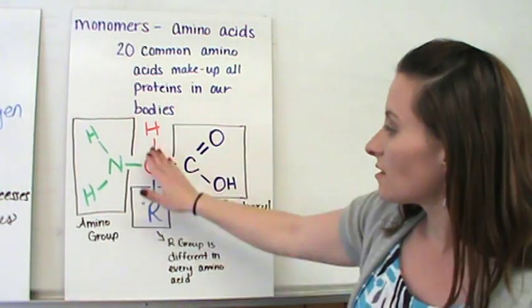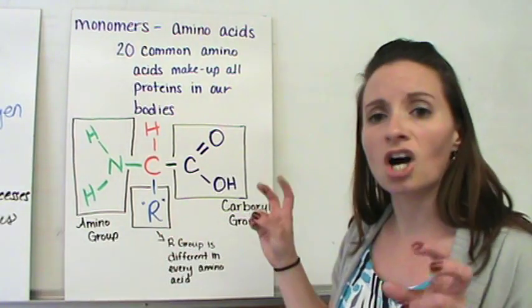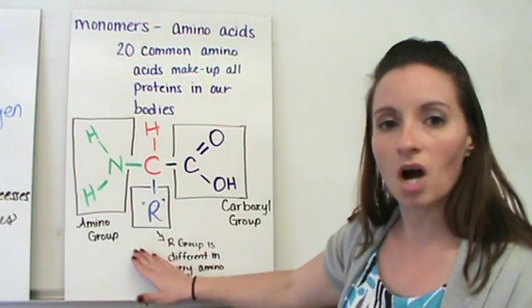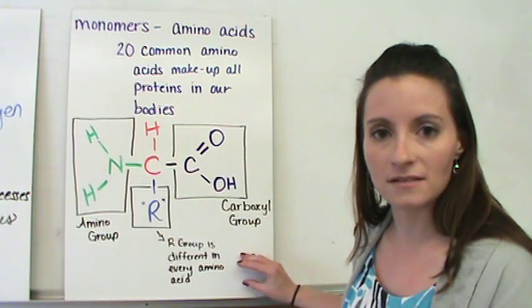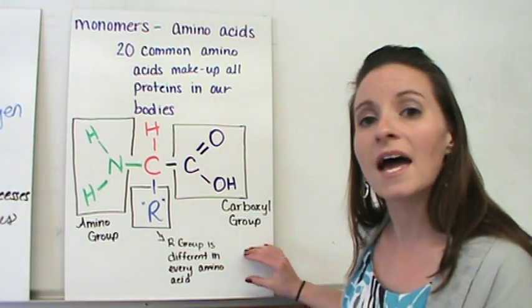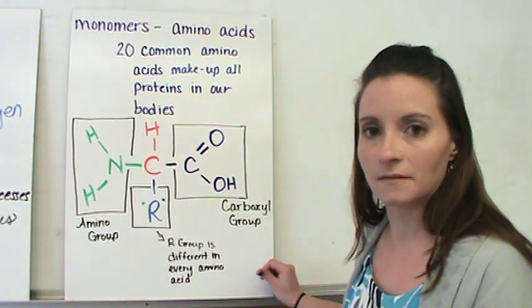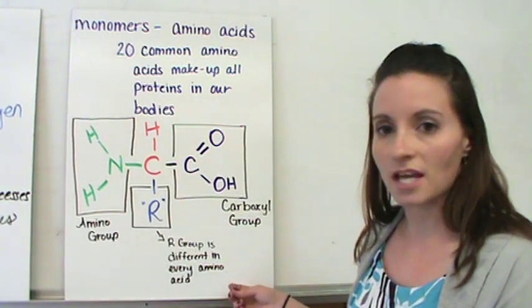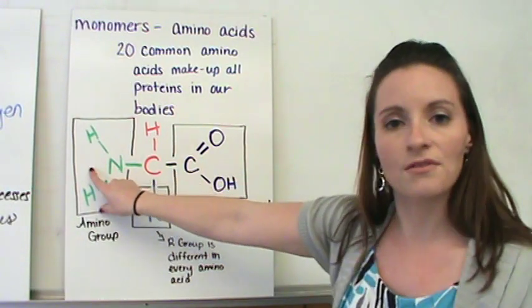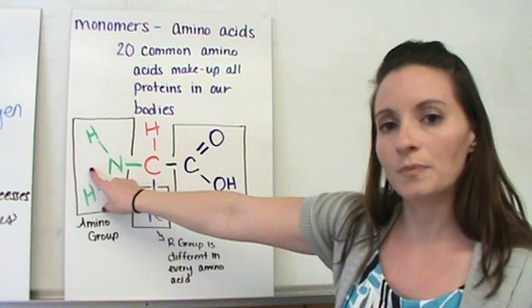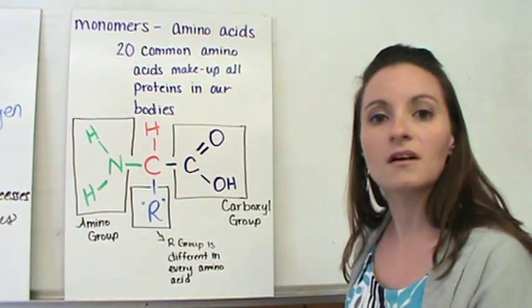And then, the third group coming off of the center is called an R group. And we use the term R because this group is different in every single amino acid. So, all 20 amino acids have a different R group, and that's how we identify the amino acids. When they join together in chains, one side's carboxyl group will join with the other side's amino group, and we will form long chains of amino acids.